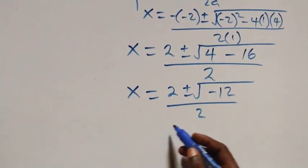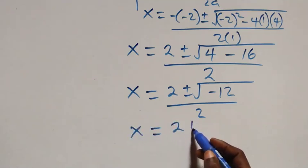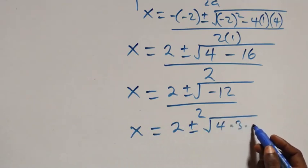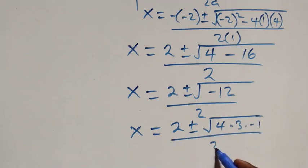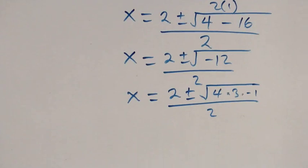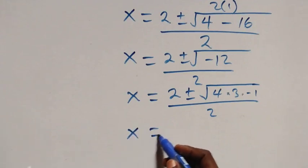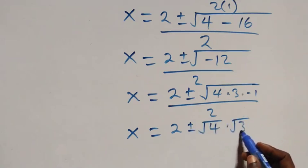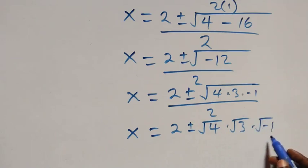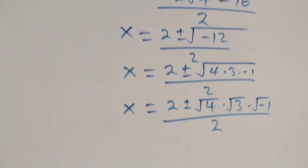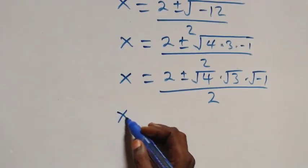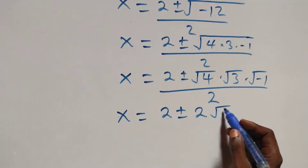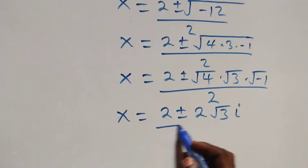We can write this as x equals 2 plus or minus square root of 4 times 3 times minus 1, over 2. Separating the roots: x equals 2 plus or minus √4 times √3 times √(minus 1), over 2. Since √4 = 2 and √(minus 1) = i, this becomes 2 plus or minus 2√3·i, over 2.